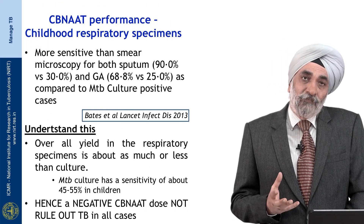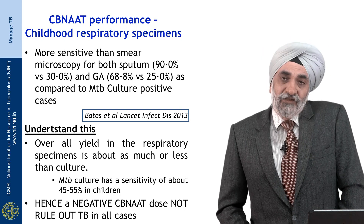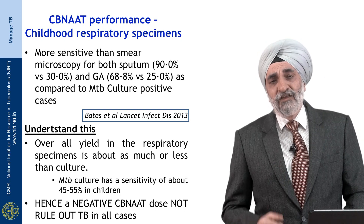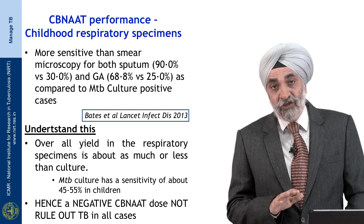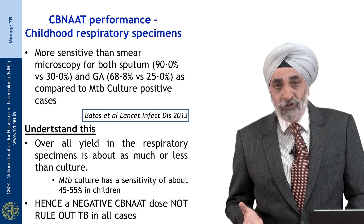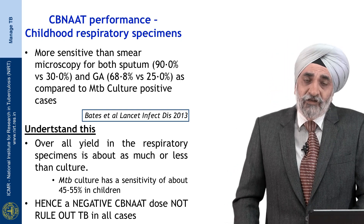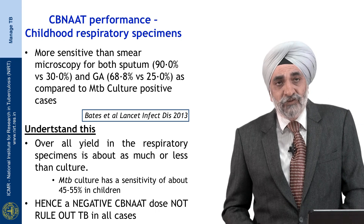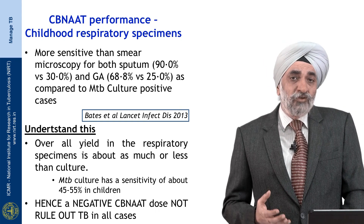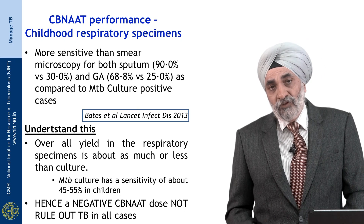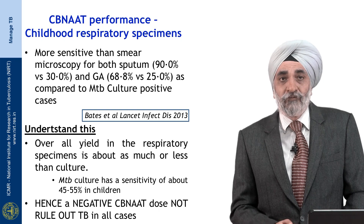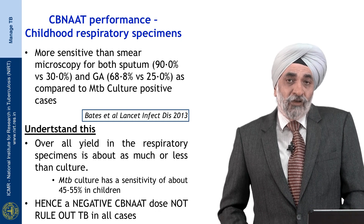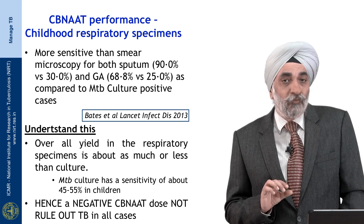Once sputum is collected, the difficulty we have always had in children is that because it is a paucibacillary disease, smear positivity is very poor — ranging about 10 to 15 percent in younger children with pediatric TB, and about 40 percent in older adolescents. As a rule, whenever you have a paucibacillary disease the yield is less, but this is increased tremendously by use of CB NAAT. Many studies have shown that CB NAAT can pick up almost as much as two-thirds or as much as culture from respiratory specimens.